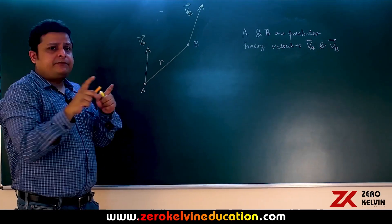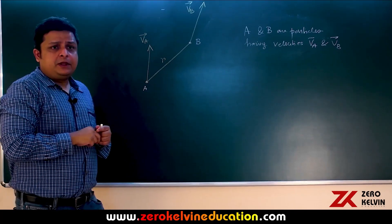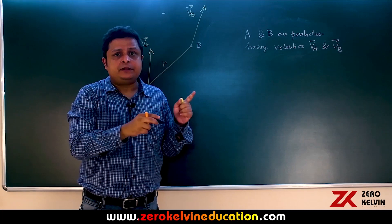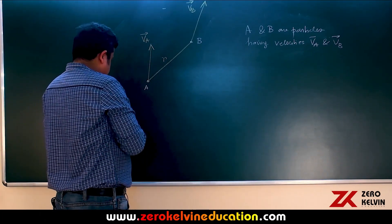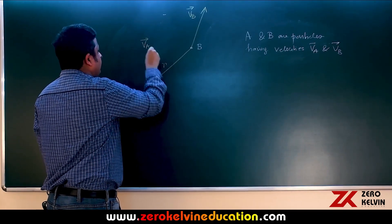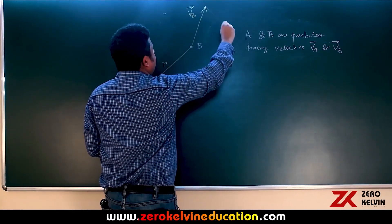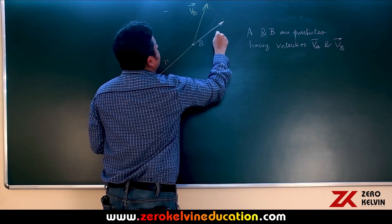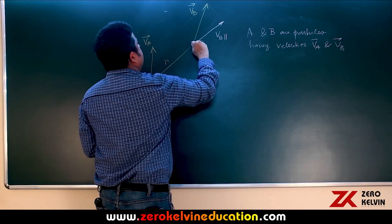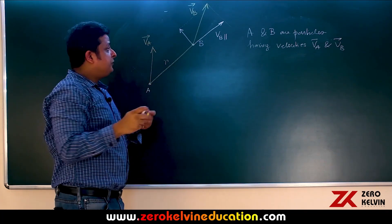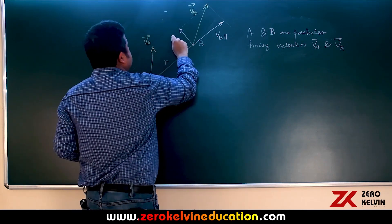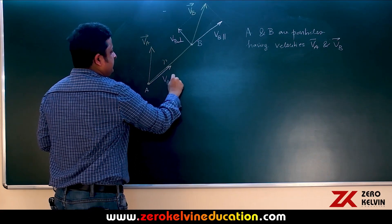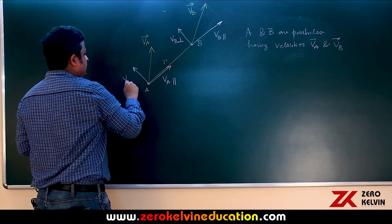Now we resolve the velocity vectors Va and Vb. One component will be parallel to the line joining the particles and the other component will be perpendicular to it. So for Vb, this is Vb parallel and this is Vb perpendicular. Similarly for Va, this component is Va parallel and the other is Va perpendicular.